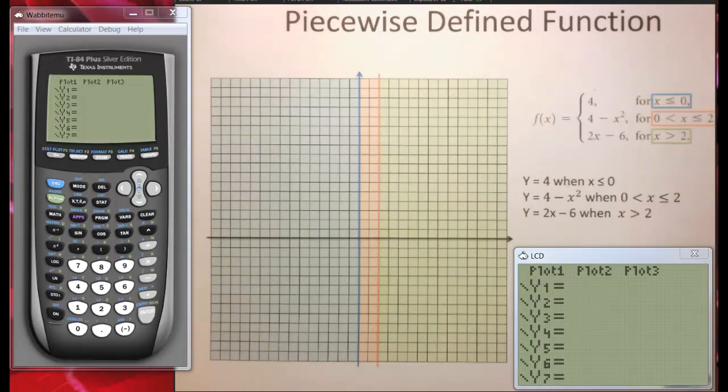Hi there. This is your math prof again, and we're back, and I'm going to graph this baby for us. What's the first part here? We're going to graph y equals 4 for all x that's less than or equal to 0. So I'm going to graph y equals 4.